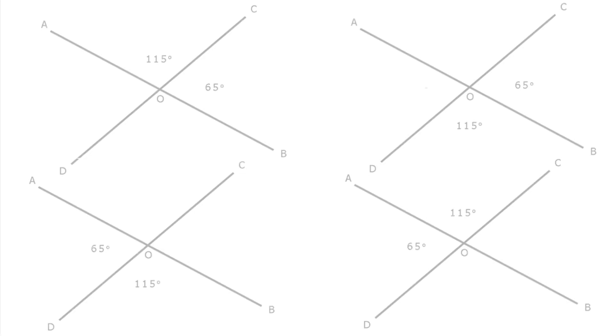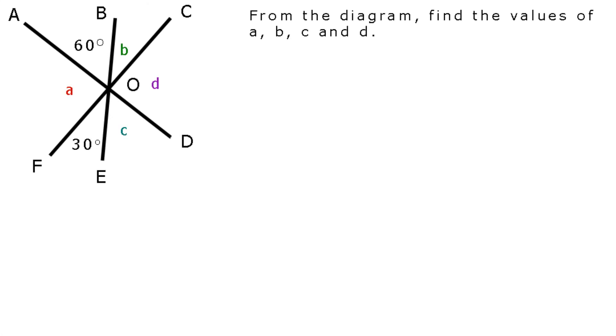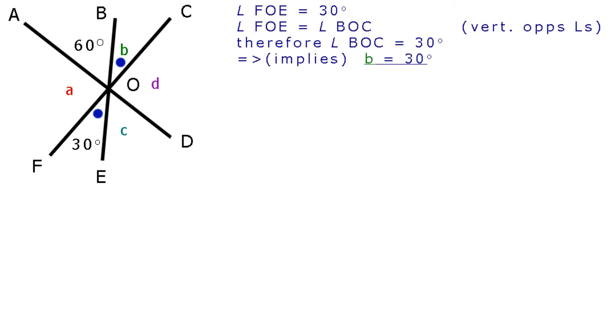OK, let's have one quick problem to draw all this together. From the diagram, find the values of the angles. Find A, B, C and D. Well, angle FOE equals 30 degrees. Angle FOE equals angle BOC, vertically opposite angles. Therefore, angle BOC equals 30 degrees, which implies that B equals 30 degrees.